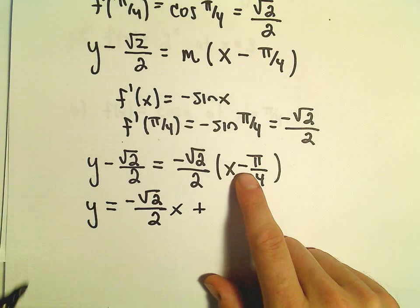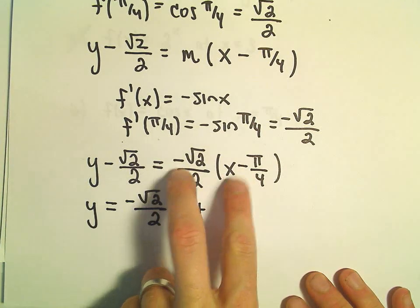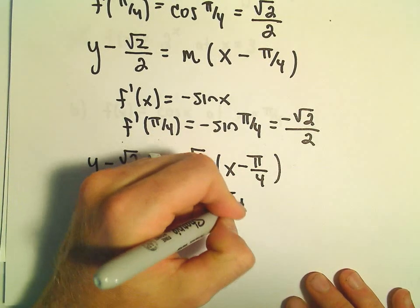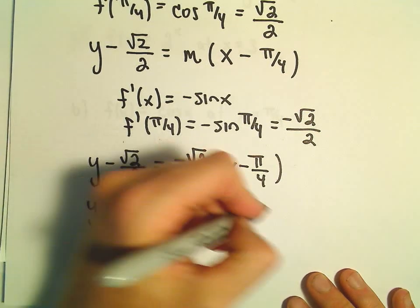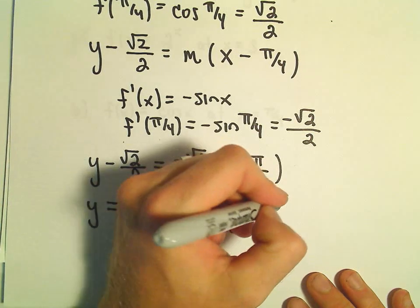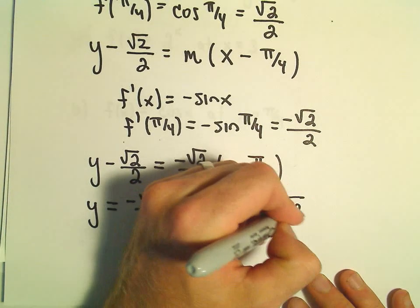We'll get a positive when we multiply. So we'll have √2π/8, and we can add √2/2.